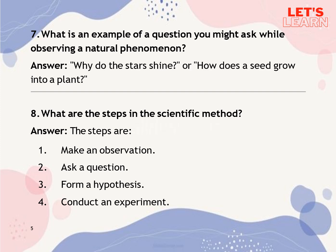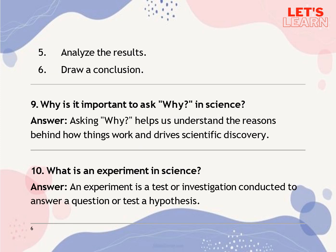Question 7: What is an example of a question you might ask while observing a natural phenomenon? Why do the stars shine, or how does a seed grow into a plant? Question 8: What are the steps in the scientific method? The steps are: make an observation, ask a question, form a hypothesis, conduct an experiment, analyze the results, draw a conclusion.